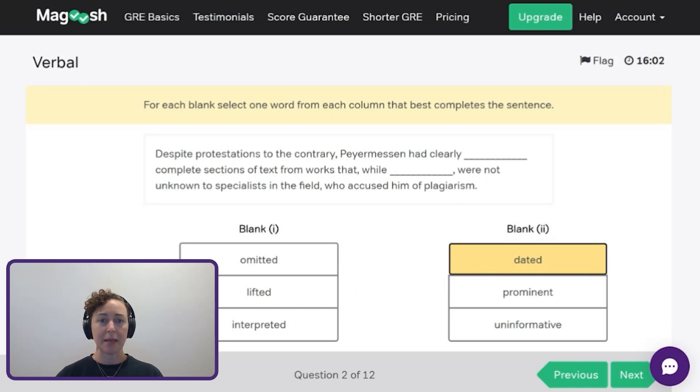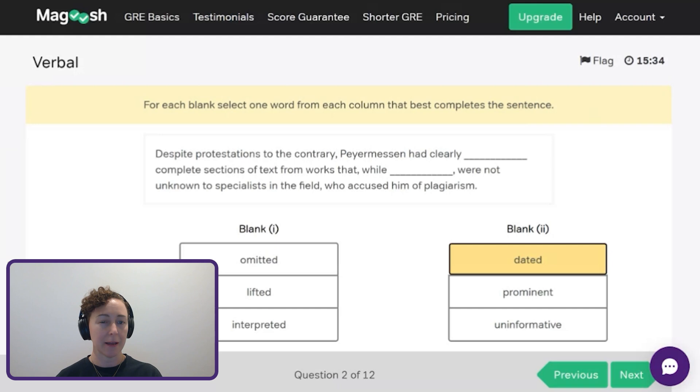Now that I have dated, this person is making protestations to the contrary. So they clearly something complete sections of texts from works. So the specialists know these dated things and this person is saying that he didn't do something. So the missing word has got to be something like taken or stolen these things. That's something that would really make sense with the context clues in the rest of the sentence. So if we look over at the answer choices, the closest thing we have to taken or stolen is lifted. And that makes sense. So this person clearly lifted complete sections of texts from works that, while dated, were not unknown to specialists. I feel good about that. That makes sense. Moving on to the next one.